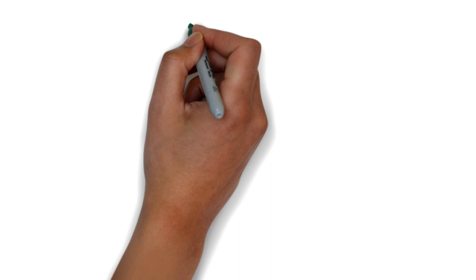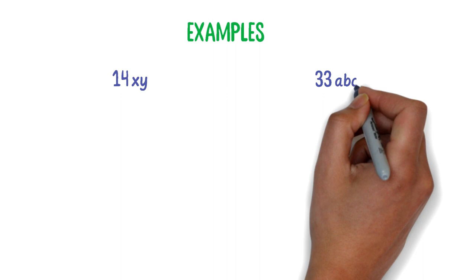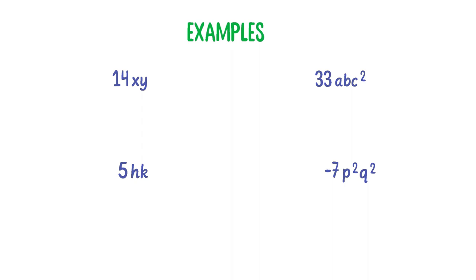Let me give some examples of algebraic terms: 14XY, 33ABC squared, 5HK, and minus 7P squared Q squared. Now, 14XY is an algebraic term because 14 is the constant, X and Y are variables, and the power of X and Y is 1. Remember that we do not write 1 as the power.